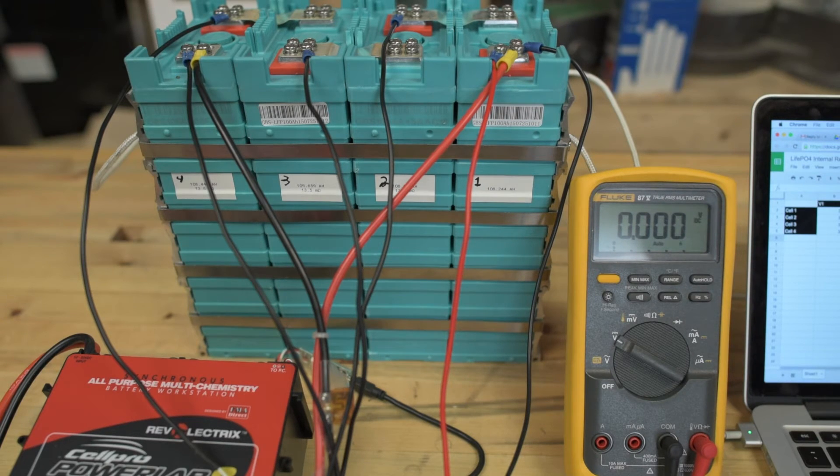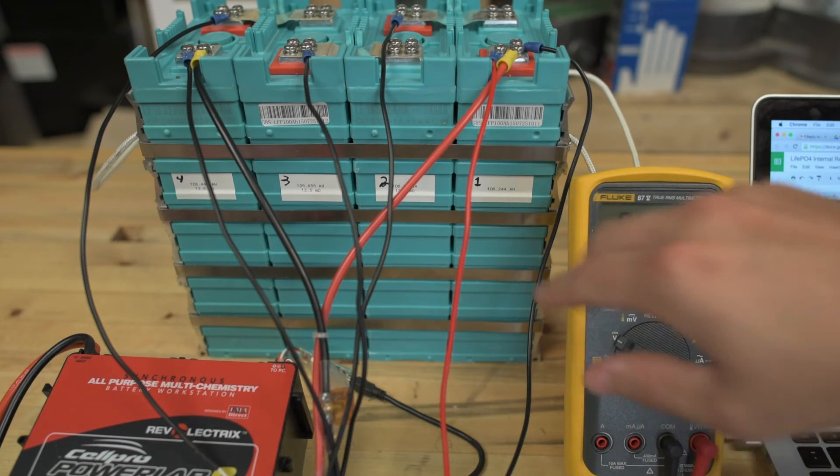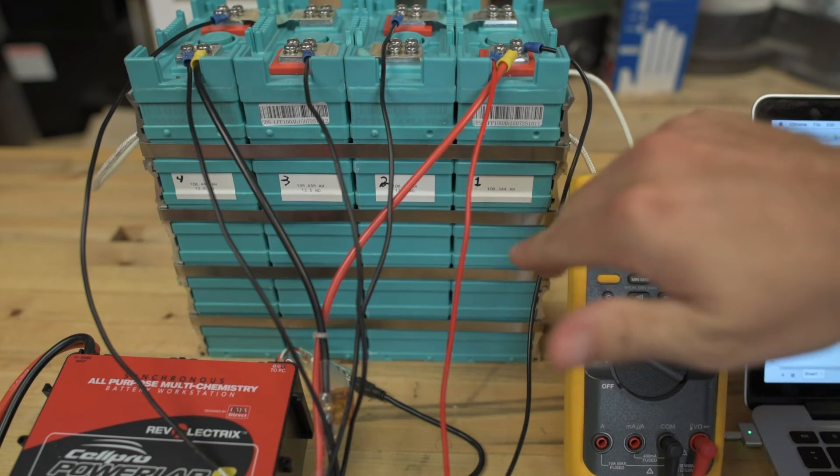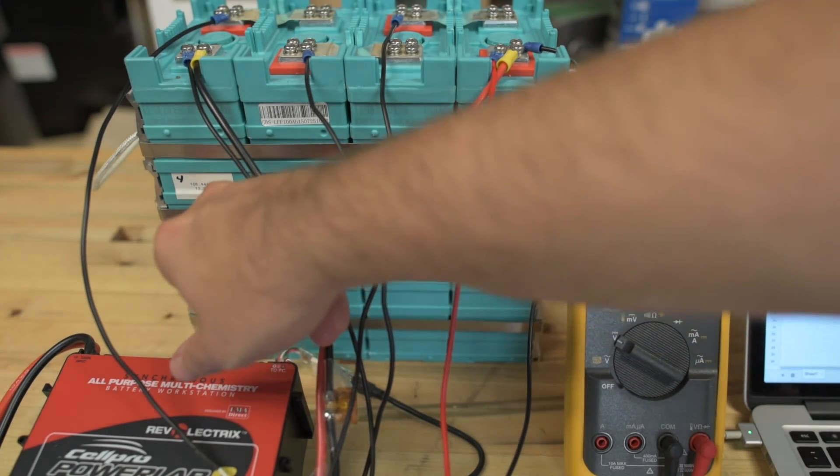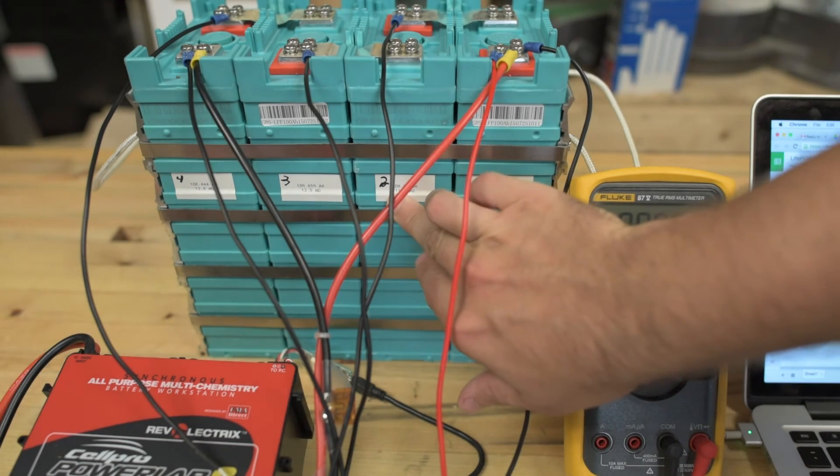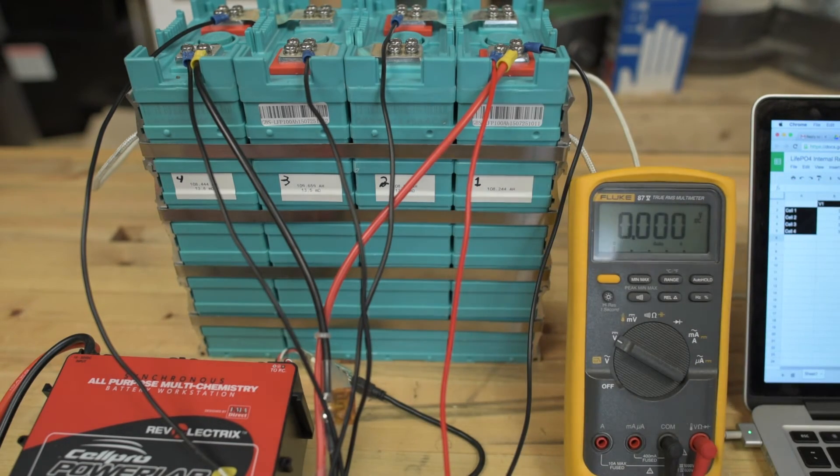Now, why did I do this in the first place? Well, as I was doing my capacity testing on this battery, the CellPro PowerLab 8 was giving me bogus internal resistance readings. It was saying they were in the 13.5 to 13.8 milliohms range. And as we can see from this short test, they are not. They're actually in the 2.5 to 2.8 milliohms range. So apparently the internal resistance readings from the CellPro PowerLab 8 on a LiFePO4 battery are relatively bogus.